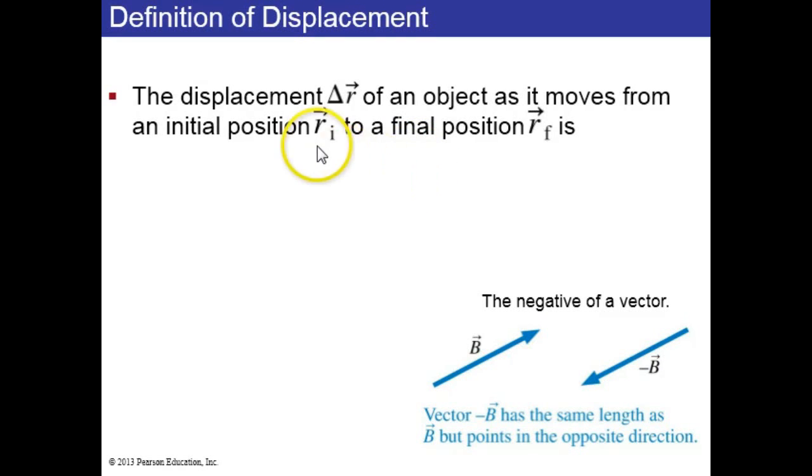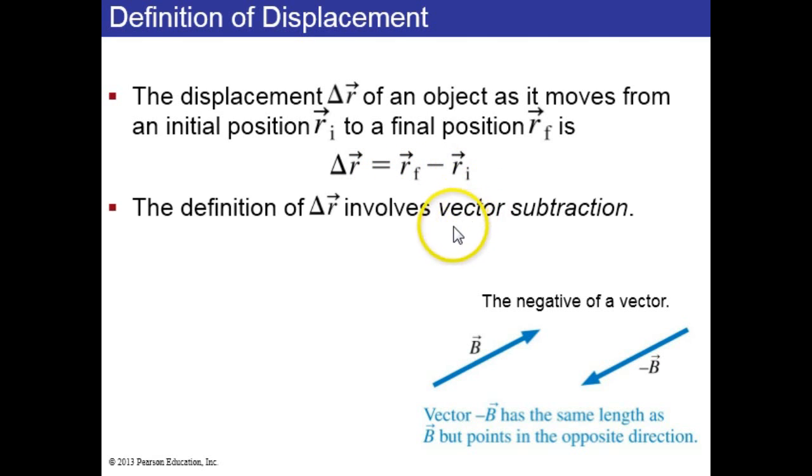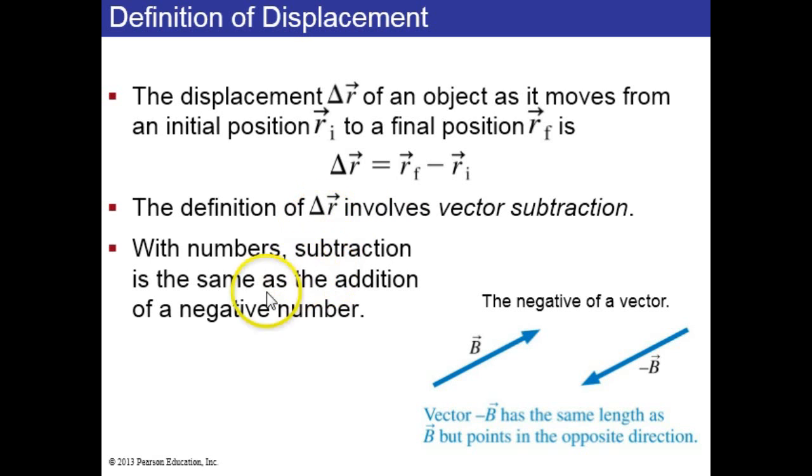So displacement. If an object has some initial position vector r sub i, i for initial, and a final position r sub f, those are both vectors. The displacement is defined as rf minus ri. So we've done vector addition. This is called vector subtraction. With numbers, the way you can subtract them is you can add the negative.